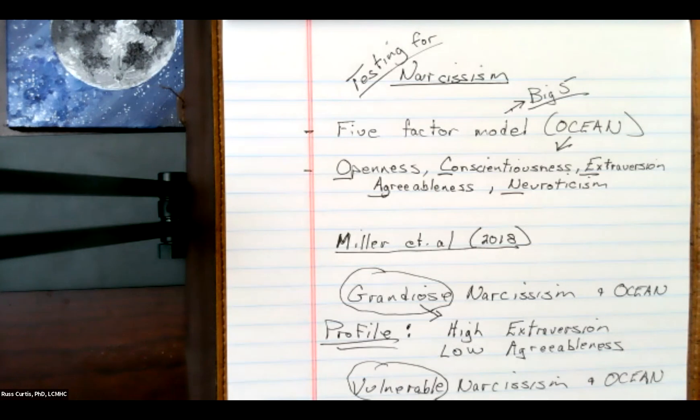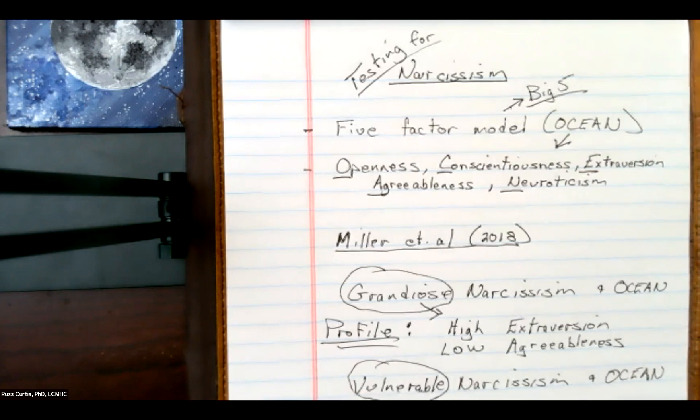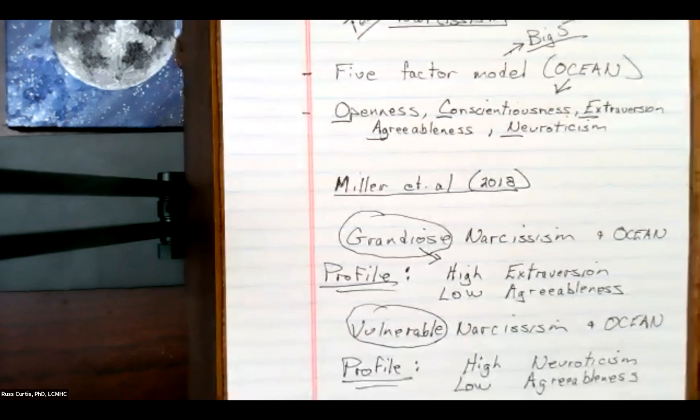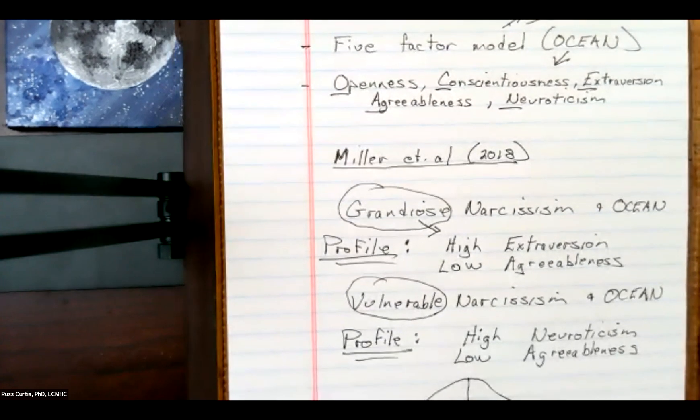Under each one of these are facets that are measuring different aspects of openness and conscientiousness. So my video goes into that. But let's look at it specifically with narcissism, and even more specifically with vulnerable narcissism. A great article by Miller et al., and I will put that in the box below.